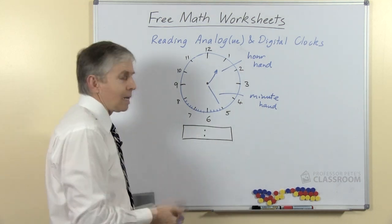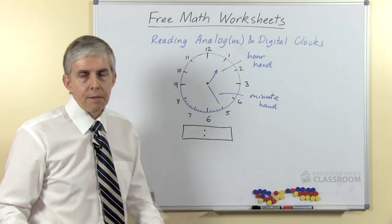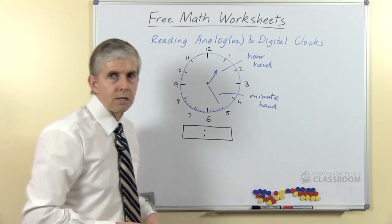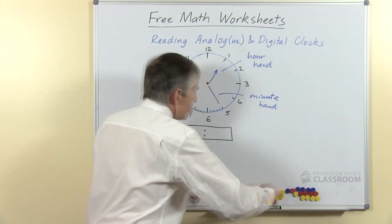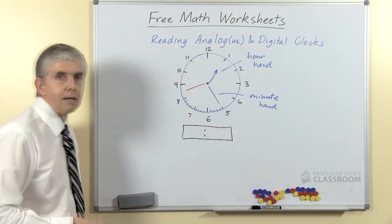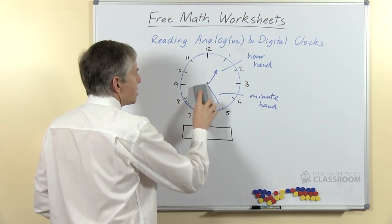Obviously the minute hand is going around much faster, and so we will teach our students that there are 60 minutes in an hour. I'll just draw in briefly the other hand, which of course is the second hand, and that marks off seconds as well. We don't need to worry about that at this point.